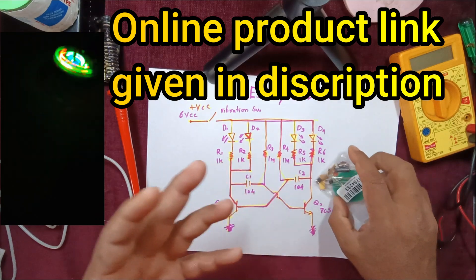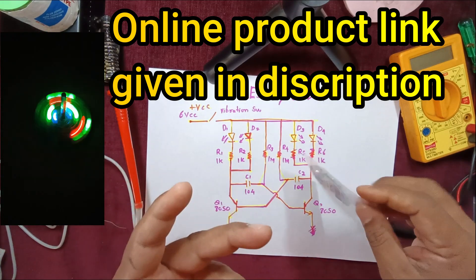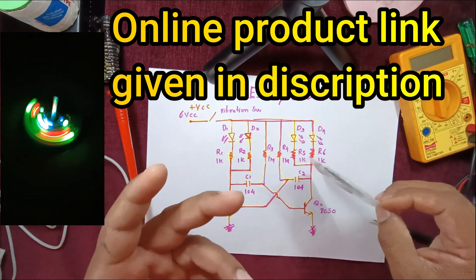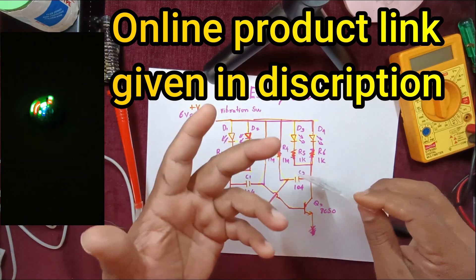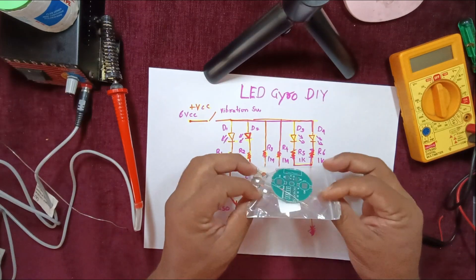The gyro works on centrifugal force. When you rotate it, it starts giving a good output in terms of glowing of LEDs and rotating motions. I've got an electronic LED gyro DIY kit here.